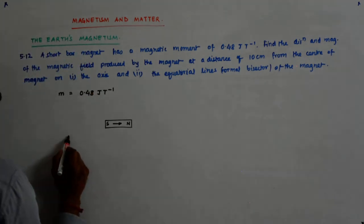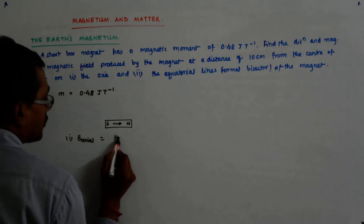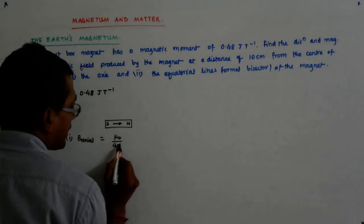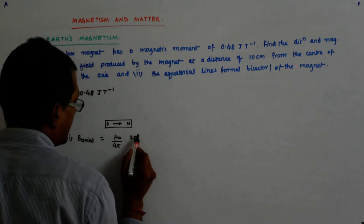Now the axial field. B axial is equal to mu0 upon 4pi into 2M, 2M upon R cube.